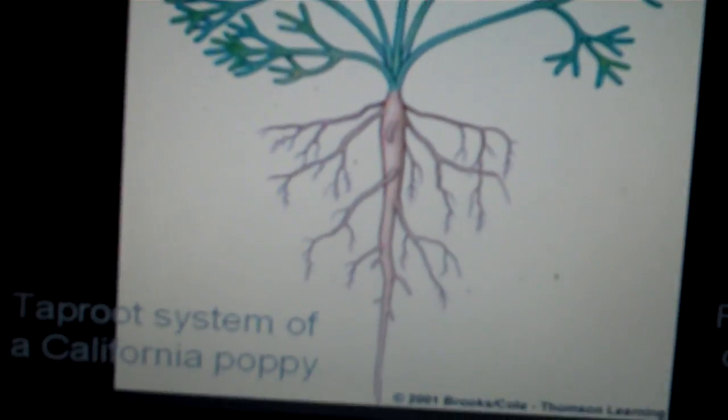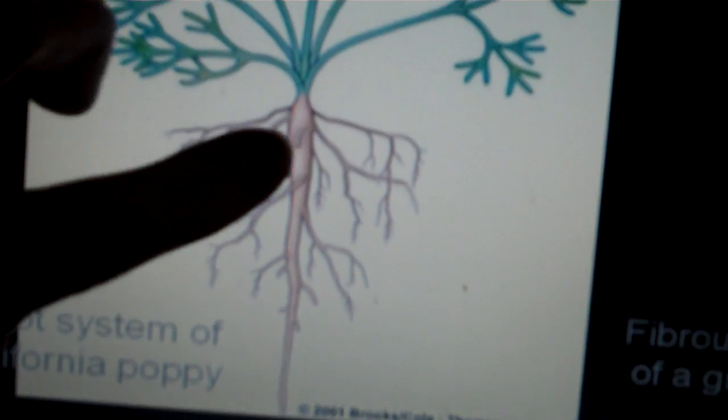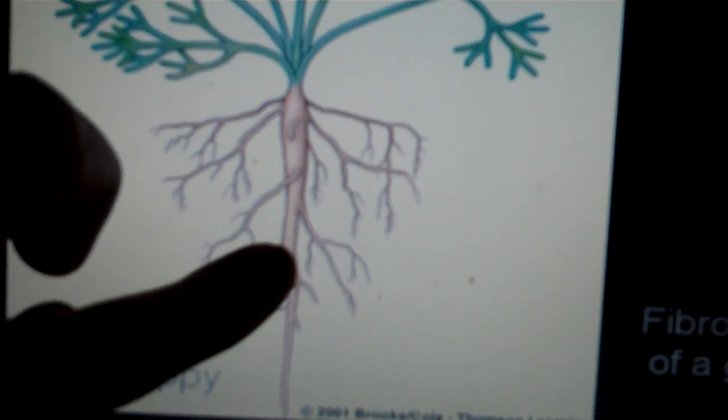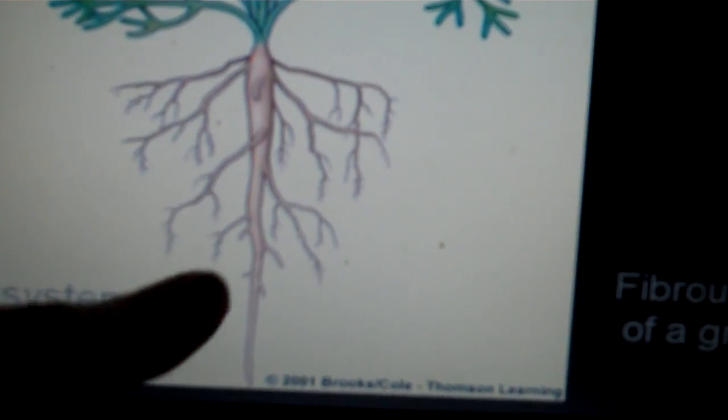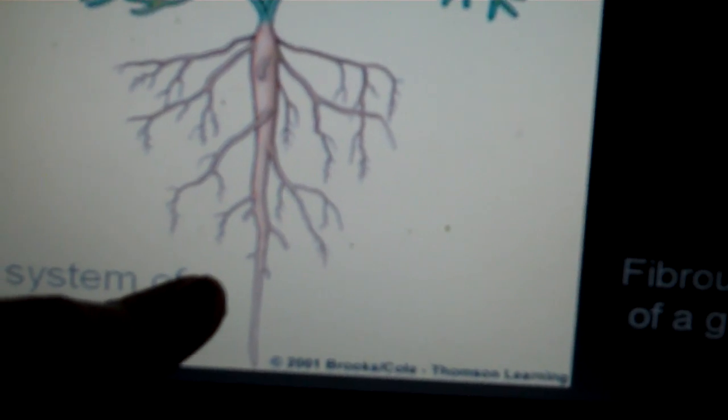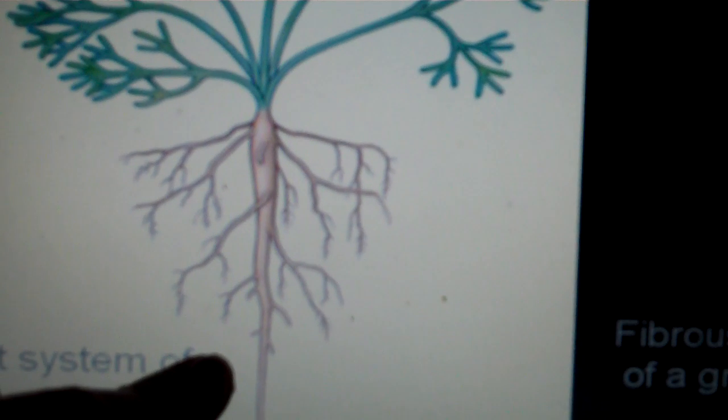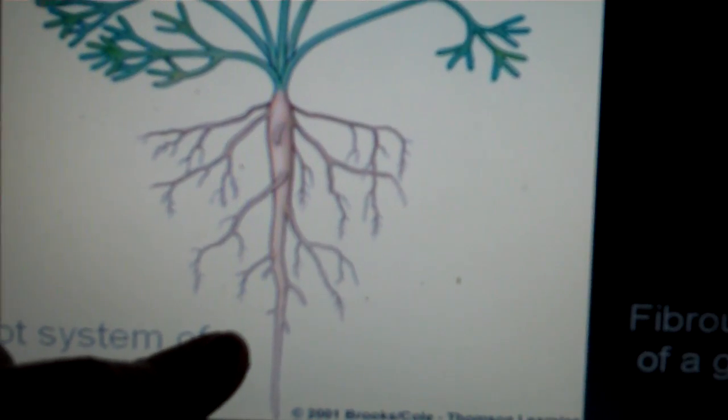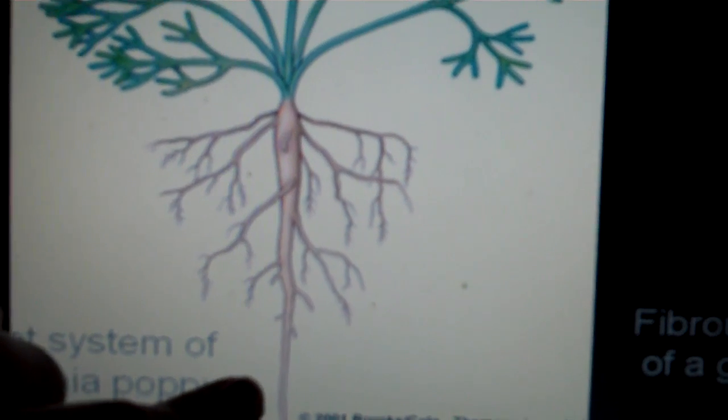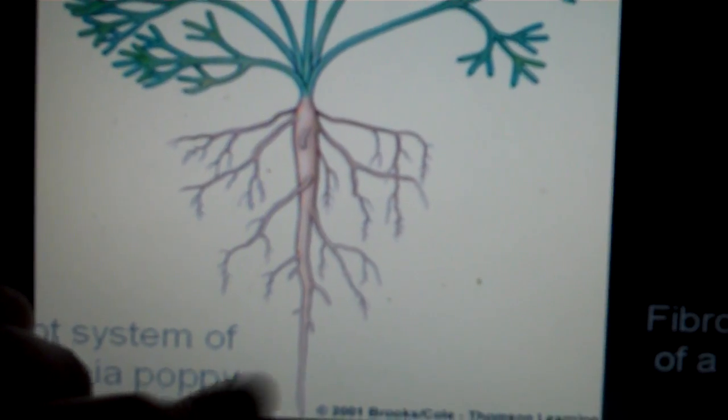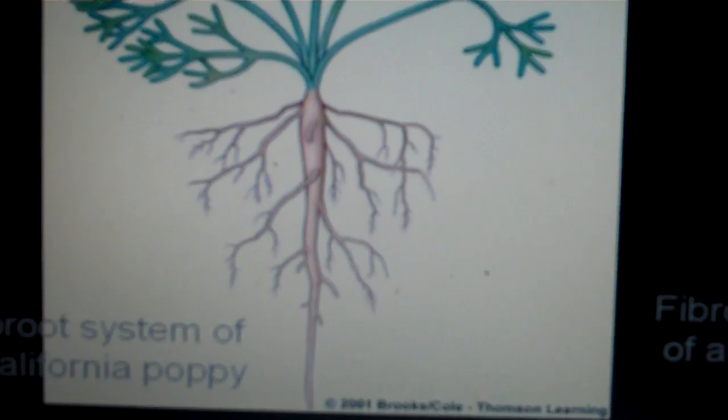Whereas a tap root system, a tap root is generally a little bit larger. It's a primary root. It has lateral roots coming off of it. A tap root can extend, depending on the plant, pretty far down into the earth. A tap root can also be like a storage root. I think like a carrot or something like that would be a tap root.